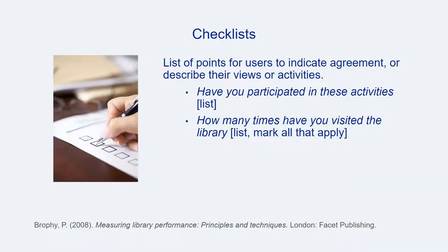One common structure for fixed choice survey questions is a checklist. Checklists are commonly used to allow respondents to indicate agreement, describe views, or report activities in a quick format. Checklist prompts may ask about participation in activities, followed by a list of activities they may select from. Checklist formatted questions might instruct respondents to check one or more than one response in a given question or set of questions.